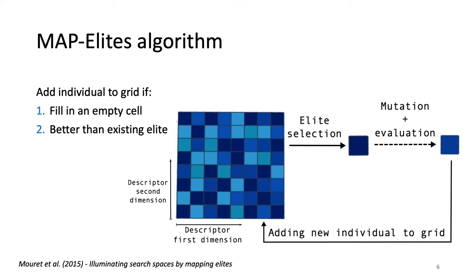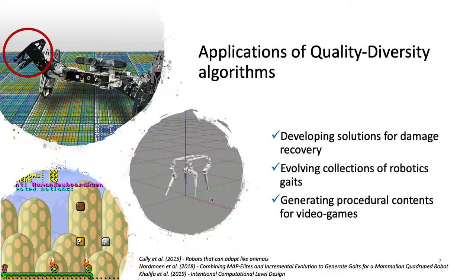This new individual is added back based on two criteria: whether it fills an empty cell, improving the overall diversity of the final population, or whether it is better than the existing elite in its cell, improving the quality of the overall population. The MapElites algorithm has been applied to many different domains, including developing solutions for damage recovery, evolving collections of robotic gaits, and collections of content for video games.